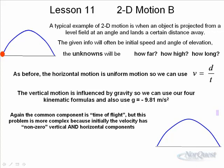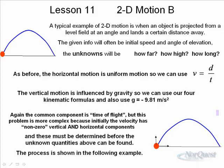This is a little more complex because initially the velocity has non-zero vertical and horizontal components. With the previous example when the ball rolled off the shelf, the initial vertical velocity was zero, which made things easier. Now it's not zero, so we have both horizontal and vertical initial movement. These must be determined before the unknown quantities can be found.